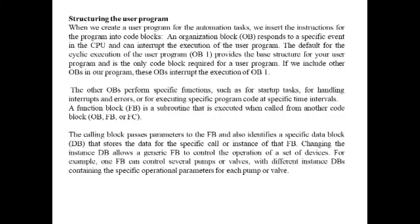The Function Block is a subroutine that executes when called from another code block such as an OB, FB, or FC. The calling block passes parameters to the FB and identifies the specific instance data block that stores data for that call. Changing the instance DB allows a generic FB to control a set of devices. A Function (FC) is a subroutine executed when called from another code block. The FC has no associated instance DB, and its output values must be written to a memory address or global DB.